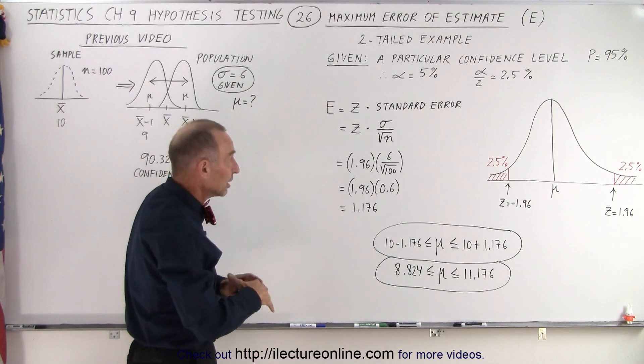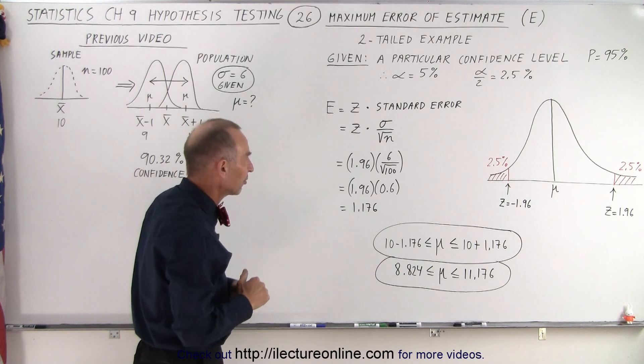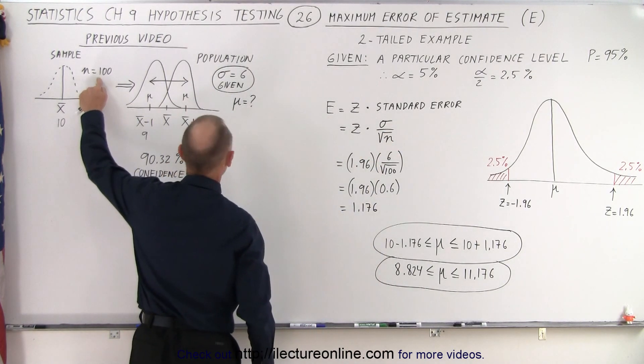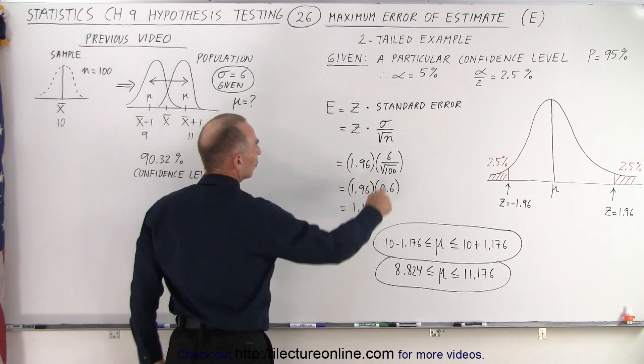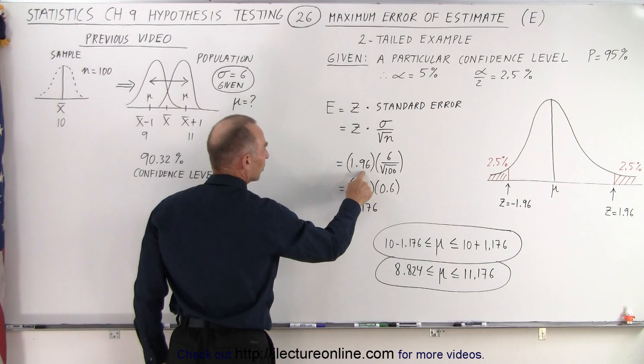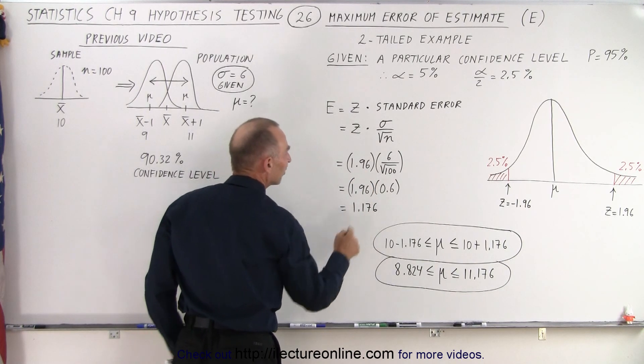Later on, in the next chapter, we're not going to do that. We'll also have to figure out the standard deviation. Then divide that by the square root of the sample size, which we set to be 100. So 6 divided by the square root of 100 is 0.6. Multiply times 1.96 gives us 1.176.